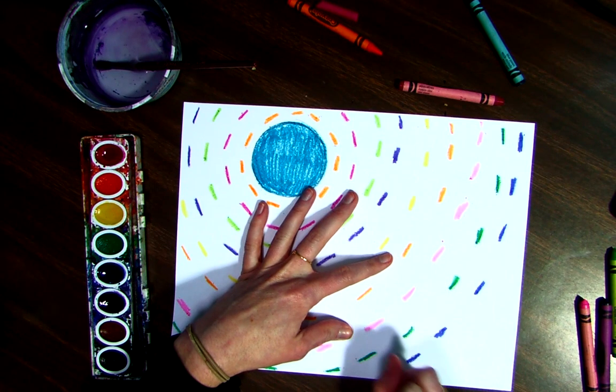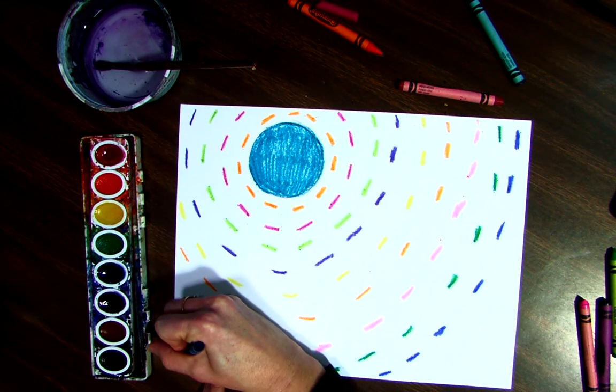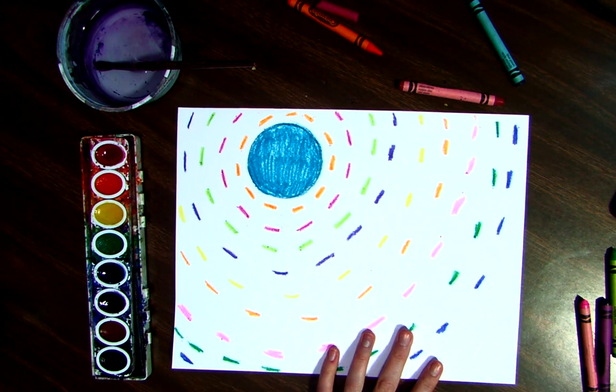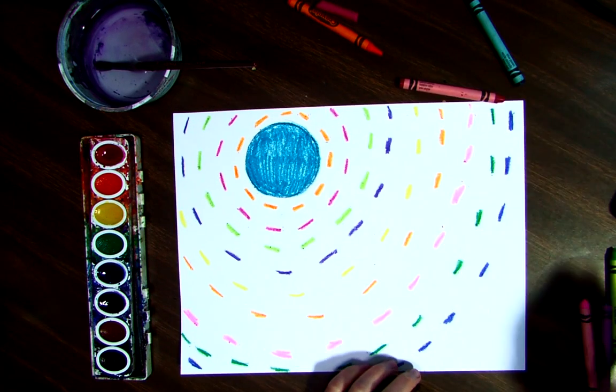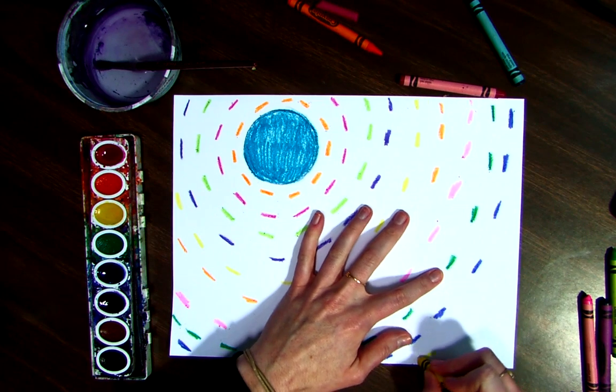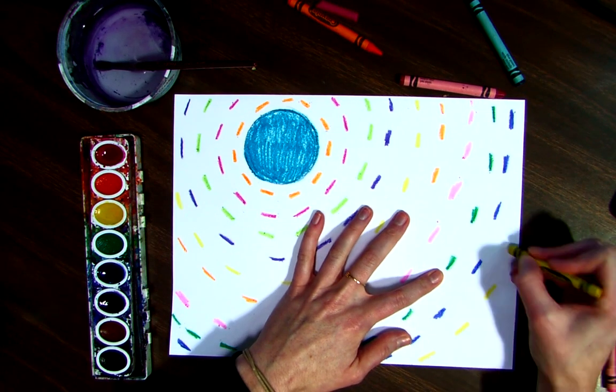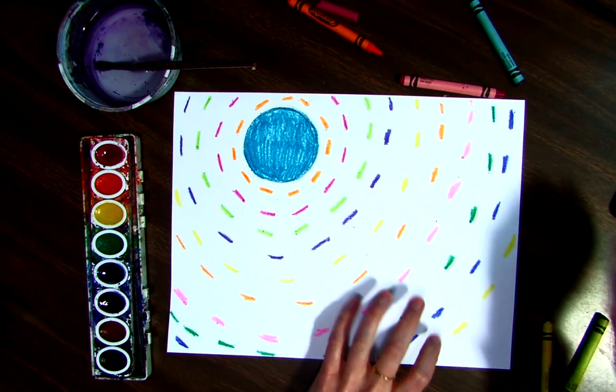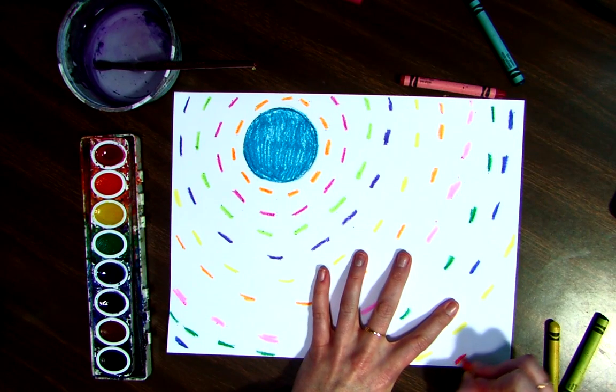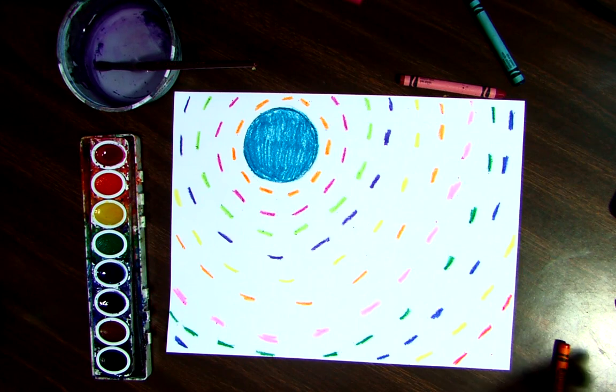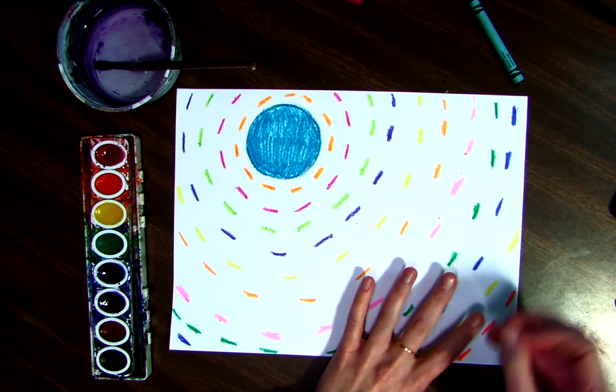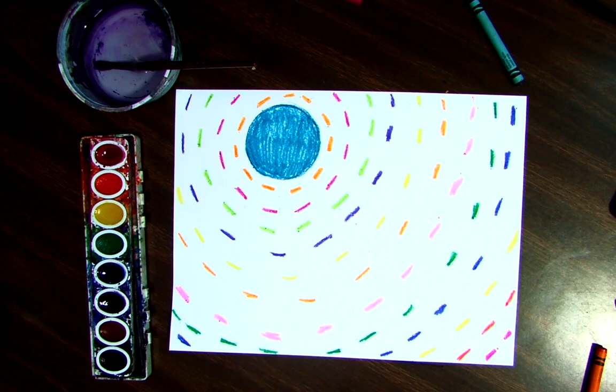As I get closer to the edge here, I'm just going to have this little section here. Now I have my lines going around my circle.